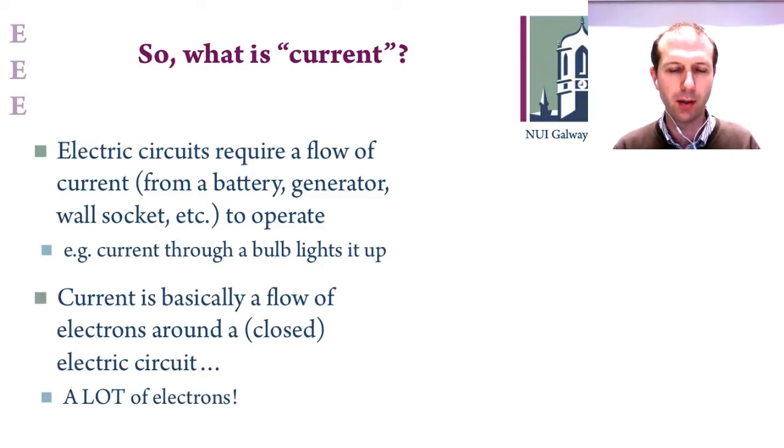We've been using the terms voltage and current. We're going to look now at what's the difference between them. Electric circuits require current to operate - so you have a torch, and if there's no battery there, it's not going to light up by itself. You apply a battery through some kind of switch through your bulb, and the current flows through that closed circuit and causes the bulb to light up. Current is basically a flow of electrons around the closed electric circuit - in fact, a lot of electrons. When we talk about milliamps and fractions of an amp, it's actually quite a lot of electrons.